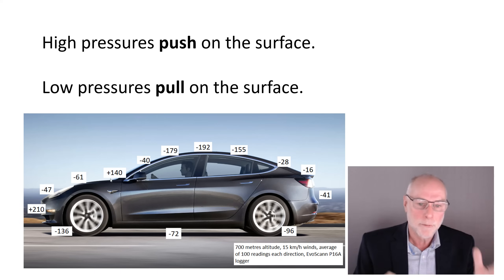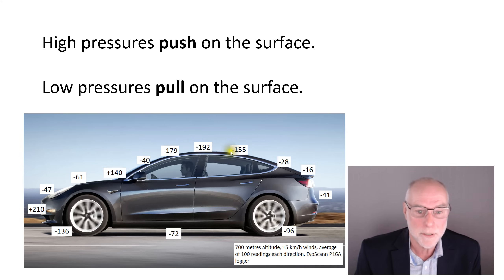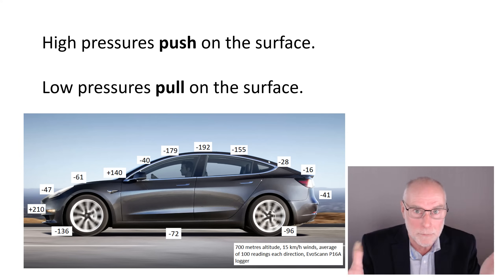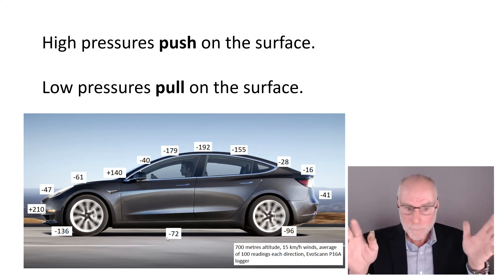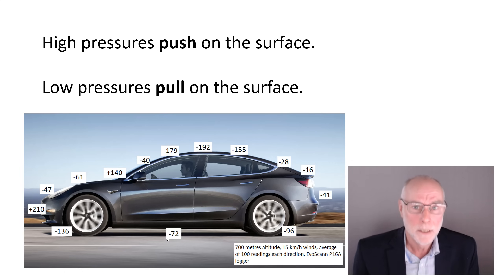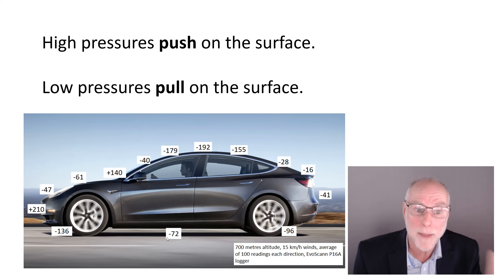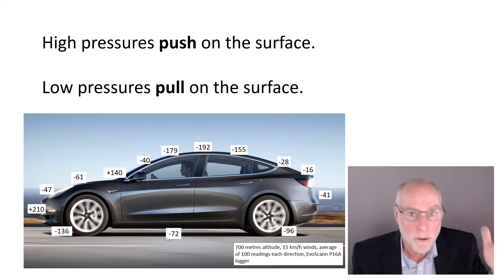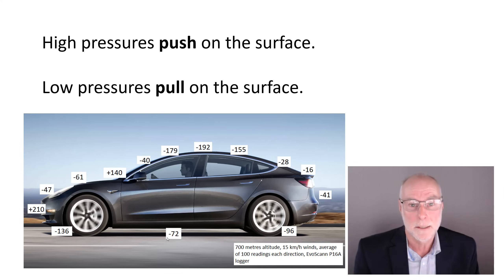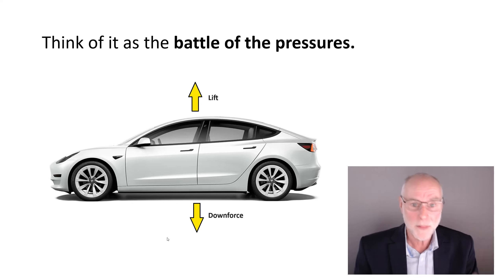The pressures are dominated by low pressures — less than atmospheric — pulling on the car. Low pressures all the way across the top of the car, pulling on those panels, trying to lift the car upwards. But on this car, we also have some quite good low pressures under the car, pulling down. So whether this car develops lift or downforce depends on the amount of low pressures on top versus the amount of low pressures underneath — it's the battle of the pressures.